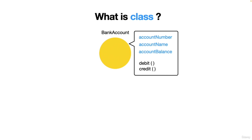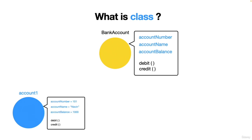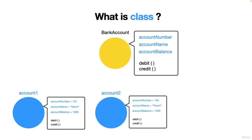Now all the customers coming to the bank and saying they want to create a bank account will start creating objects. The first customer creates account one — the bank creates an object, passing in account number, account name, and initial balance, and gives debit and credit facilities. The second customer also comes and the structure is already ready, so the bank creates a second object with their account number, name, balance, and the same facilities.